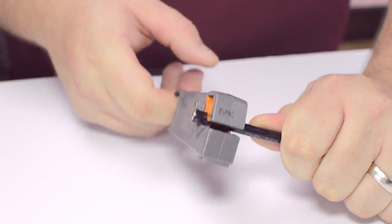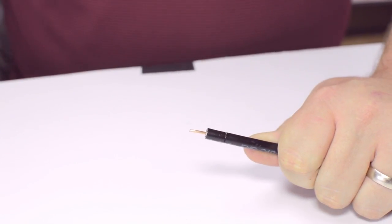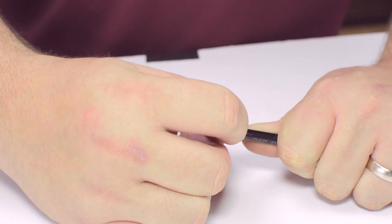Then, using your cable stripper, strip back the outer jacket and dielectric. The advantage of using a cable stripper is that it will strip back the jacket and dielectric at the same time.